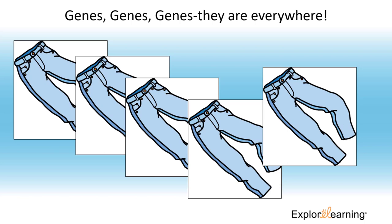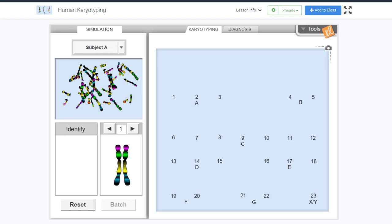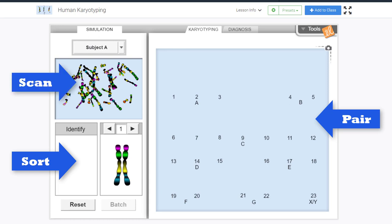Genes, genes, genes. Who doesn't like a good pair of genes? In the human karyotyping gizmo you can learn to sort and pair the images of human chromosomes obtained in a scan.